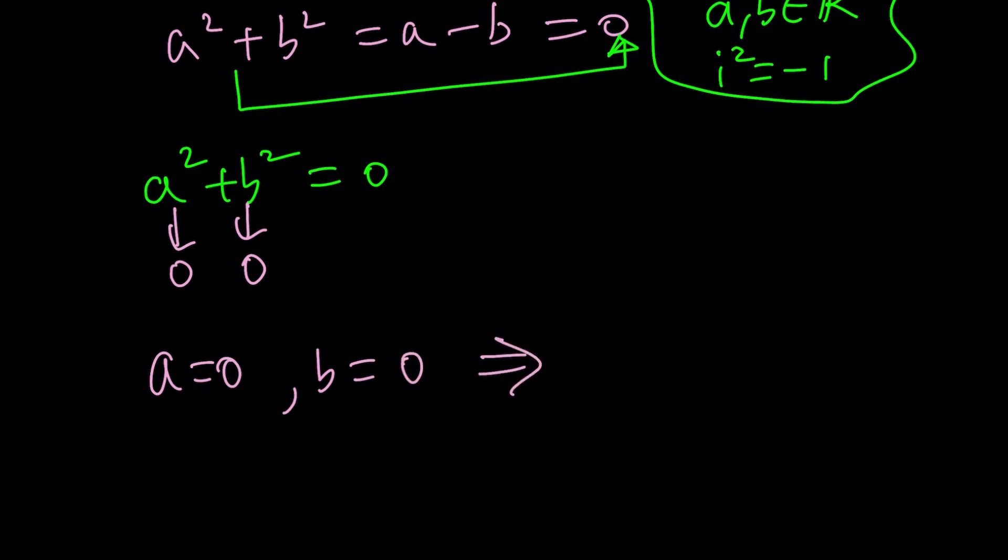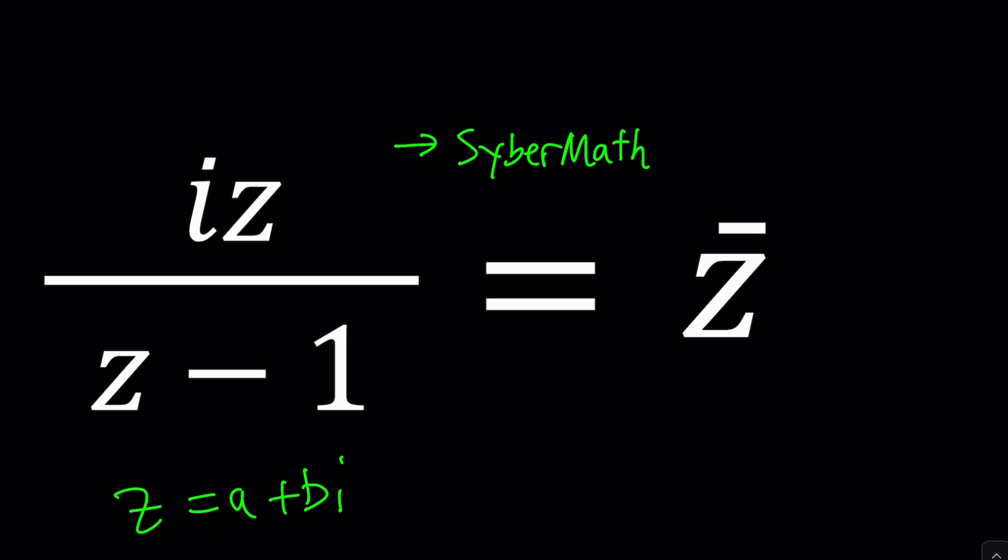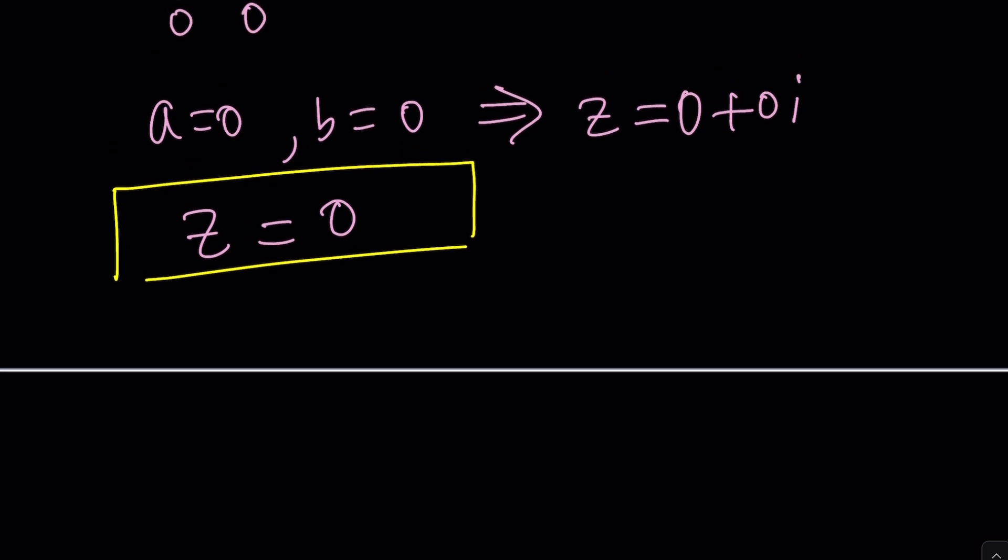Does this count as a solution? Absolutely. So Z becomes zero plus zero I. In other words Z is good old zero. And if you check the original problem what was the original problem? Let's go back here and look at the original I Z over Z minus one. And of course if you replace Z with zero zero over negative one equals zero absolutely. And the conjugate of zero is zero because it is zero plus zero I. If you take the conjugate it's zero minus zero I. They're both zero. So for a suffer that's how we say it in Turkish. Anyways.